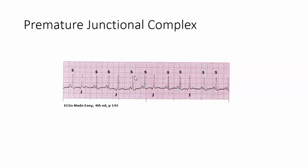Now, take your calipers and go from S to S. We're going to look at the rhythm. I counted 12 small squares, so that gives us a rate of 125 beats per minute — so we're looking at a sinus tachycardia. This beat should have occurred here, this one should have occurred here, here, and here. So you can see the beats are happening early. We have an inverted P occurring before the beat should have happened.